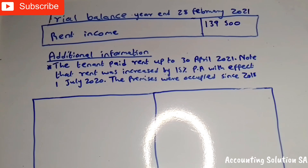They also said the premises were occupied since 2018. Now the problem is that if we take R139,500 divided by 13 we are not going to get the correct amount, because in the middle of the year the rent has increased by 15%.